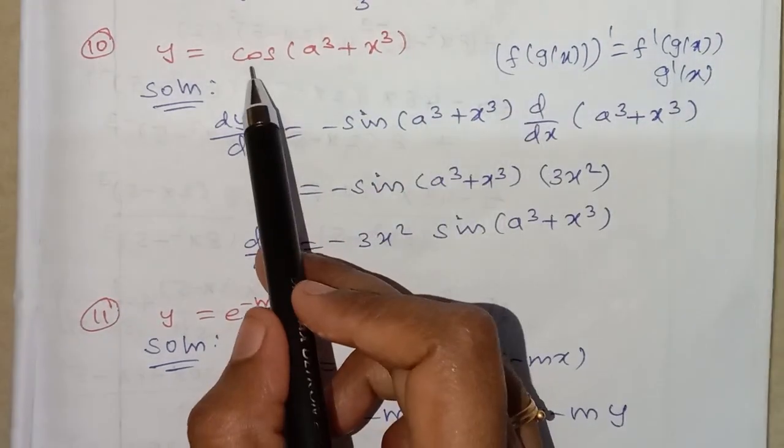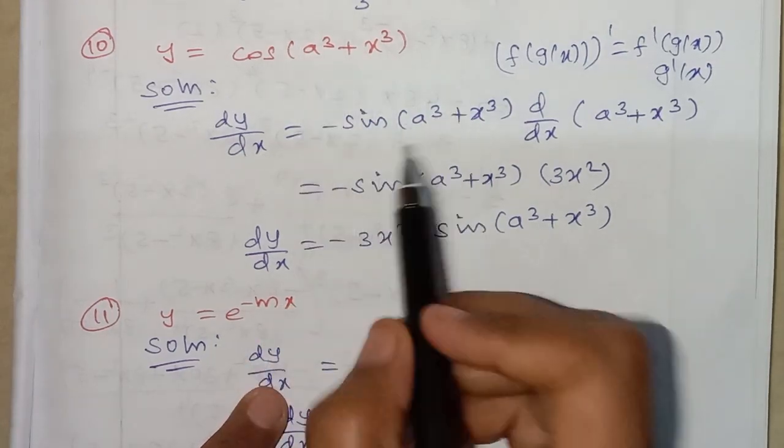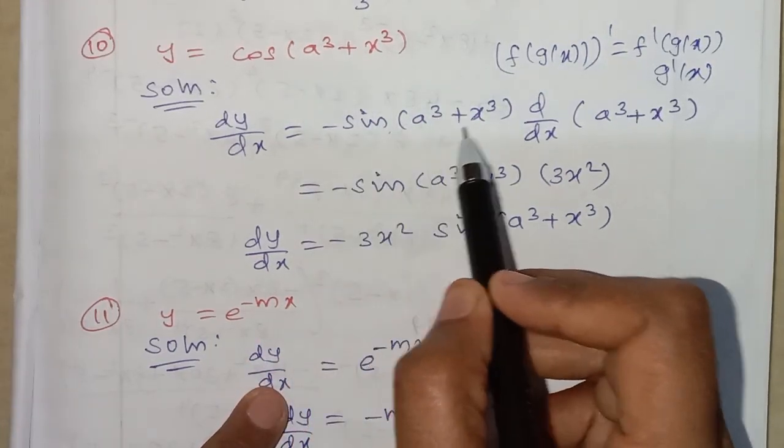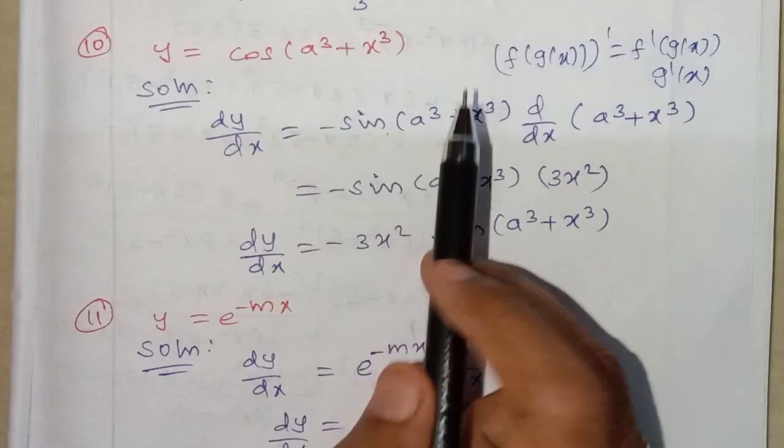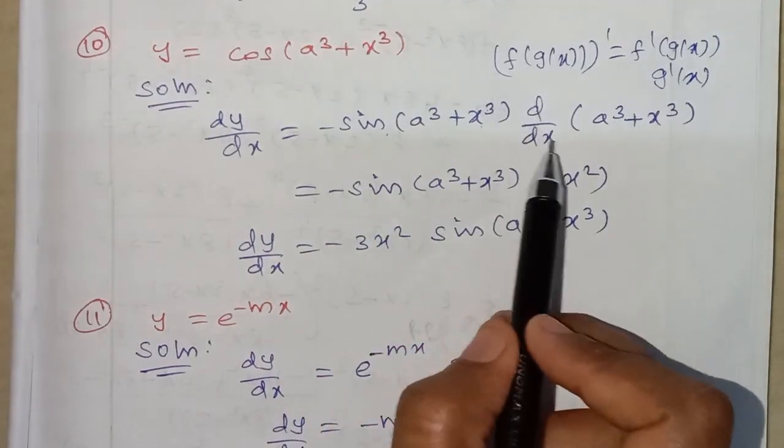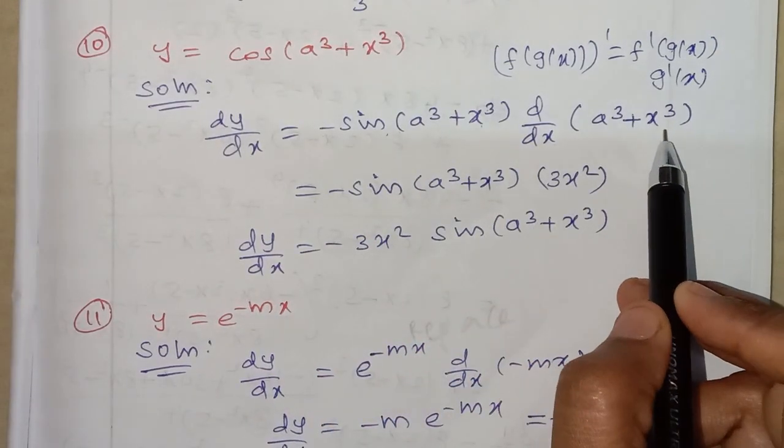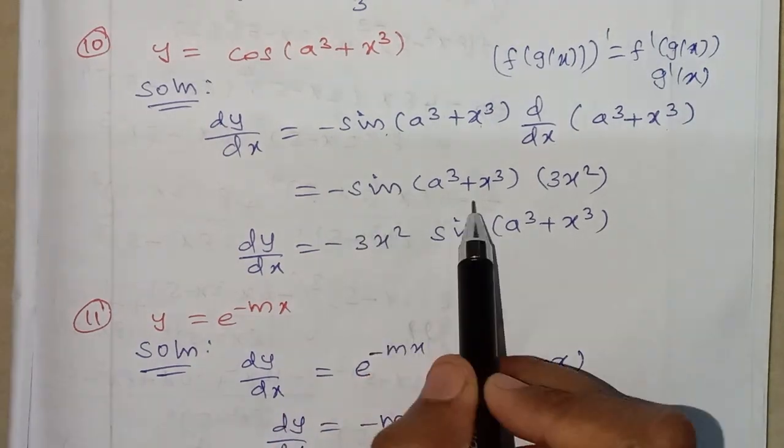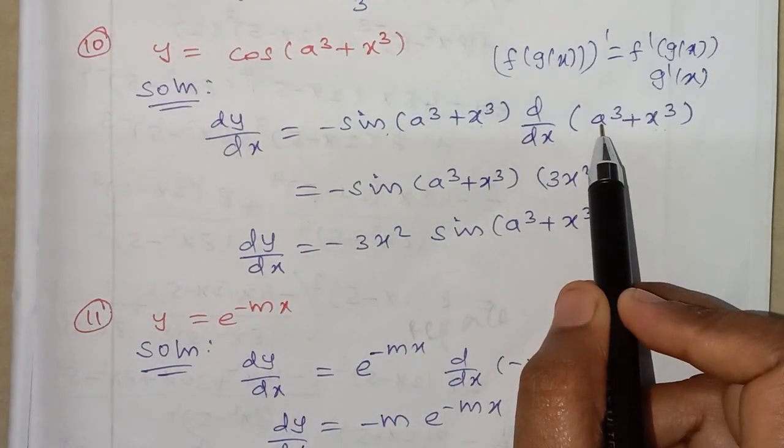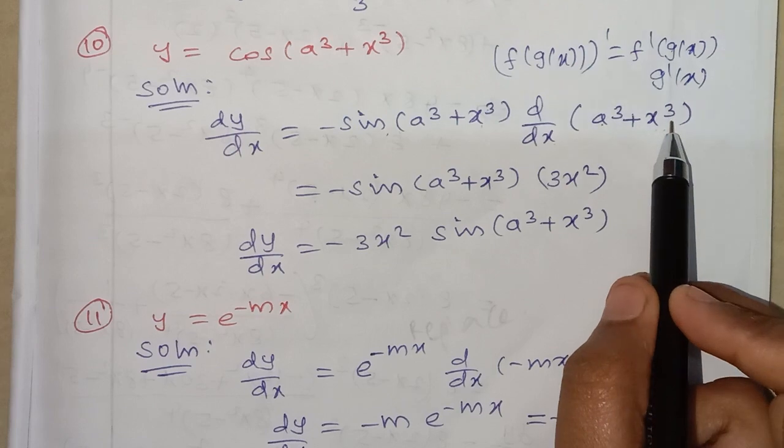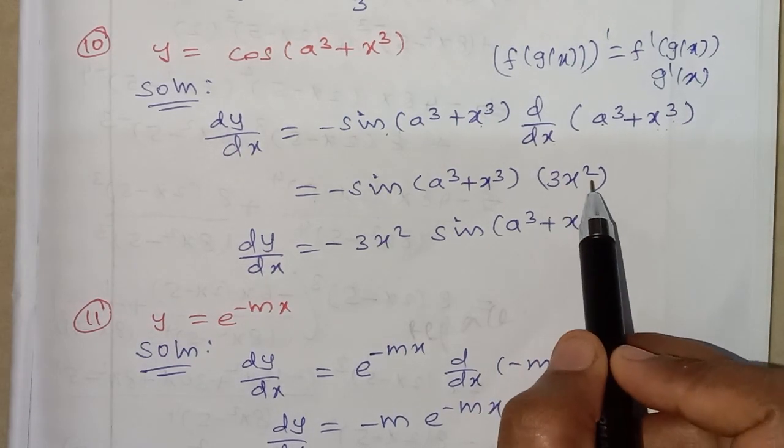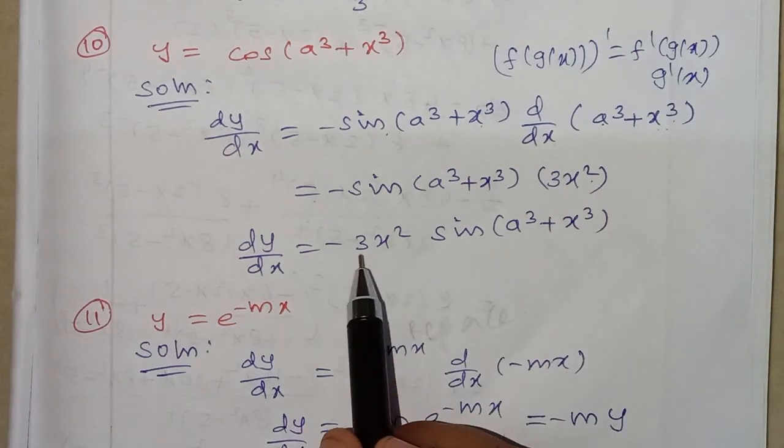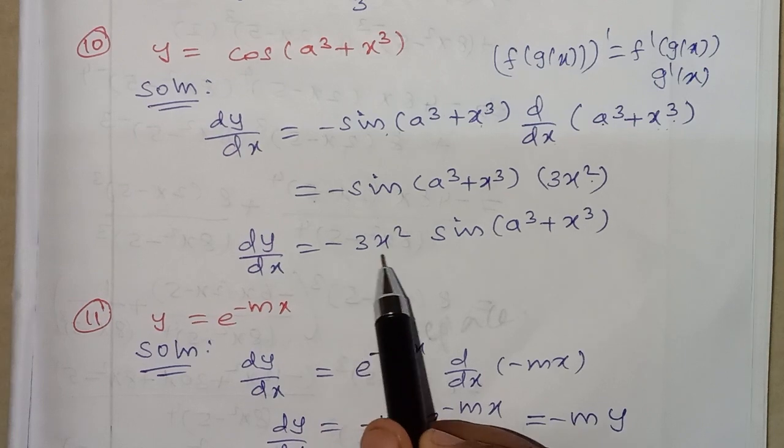First function derivative... the final answer is minus 3x square sin of a cube plus x cube.